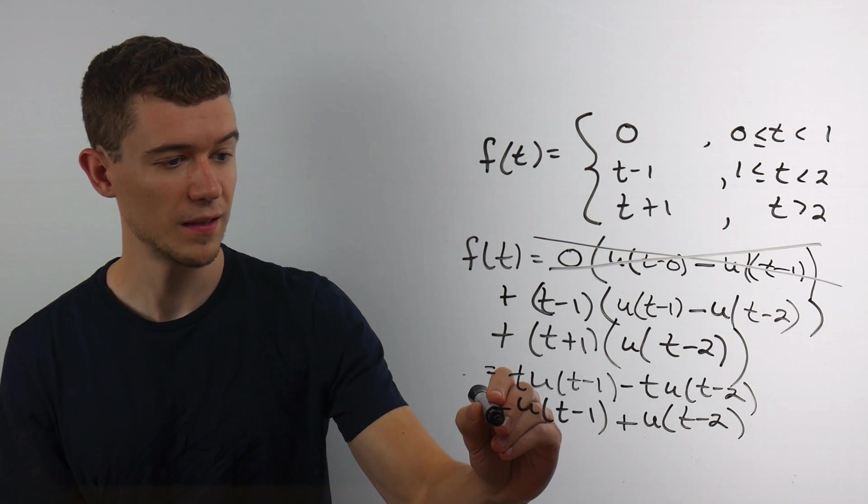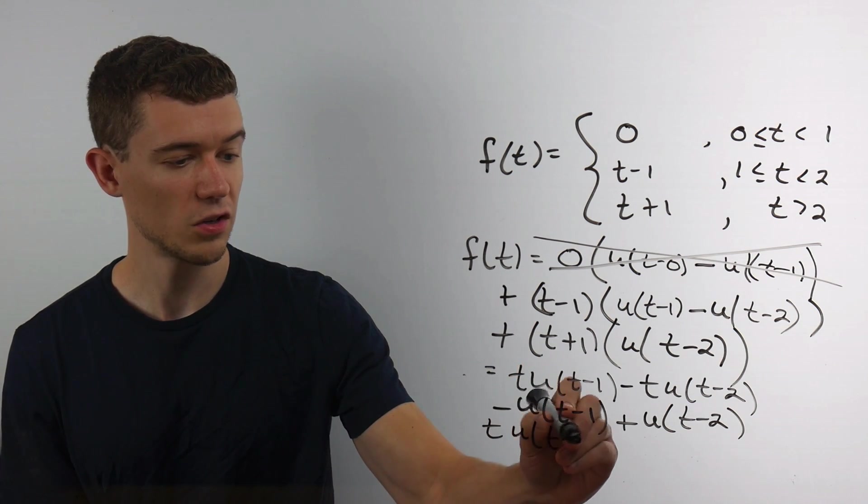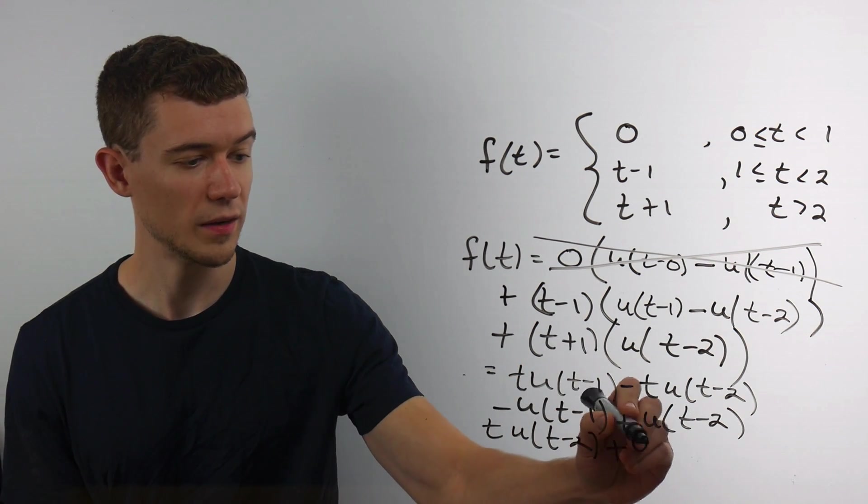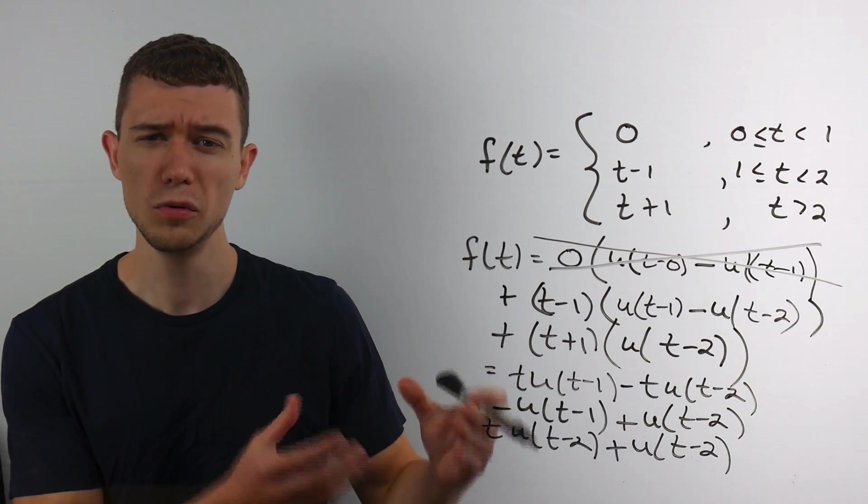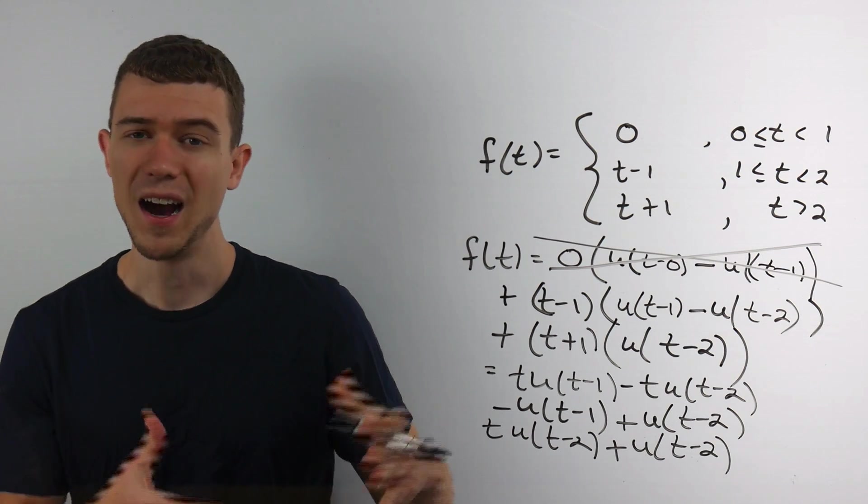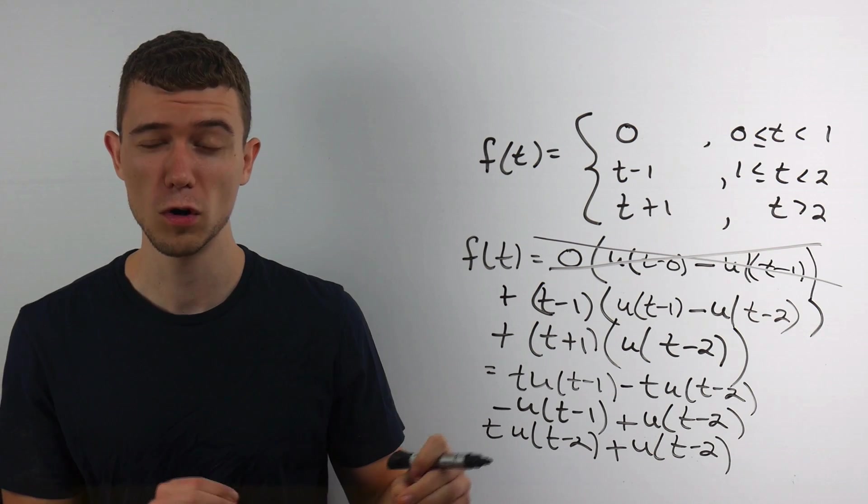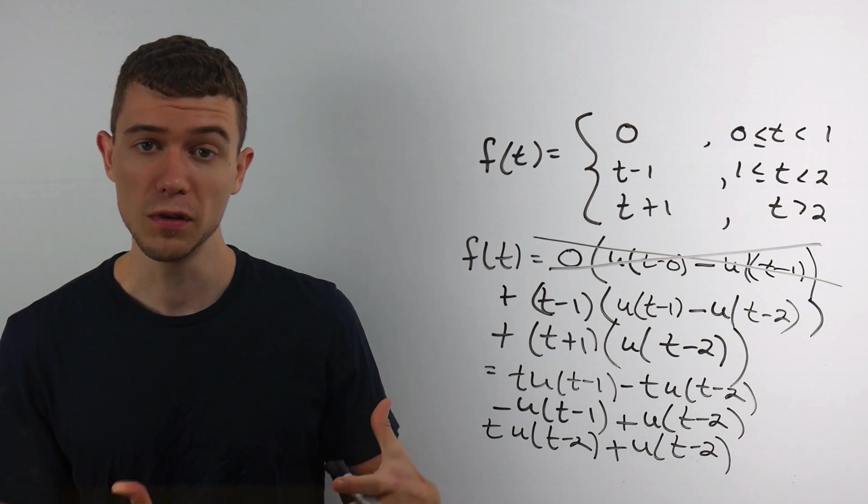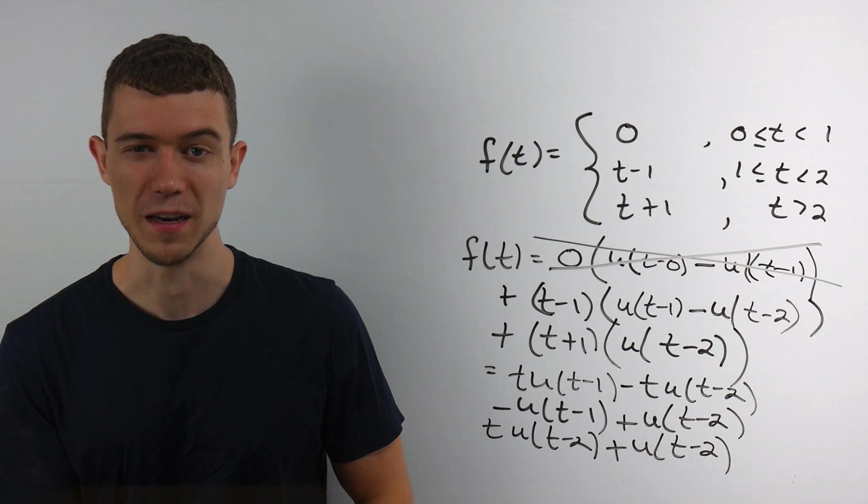And then I would have minus a minus to make a plus u of t minus 2. And then I also have this piece. If I distribute, I'd have t times u of t minus 2, plus 1 times u of t minus 2. So you don't have to do this distributive stuff as much as I did. I did it just because I think it makes the Laplace transforms a little bit more straightforward. Your teacher might do it differently. You might be comfortable doing it a different way. This is just how I'm doing it in this example.